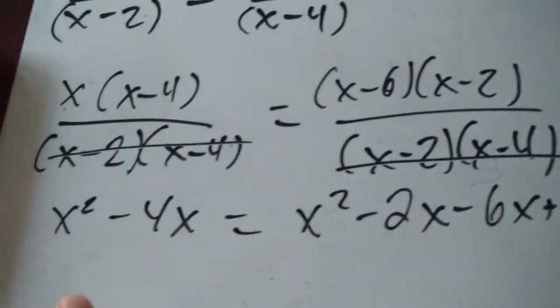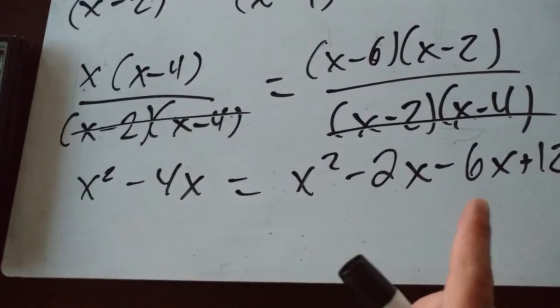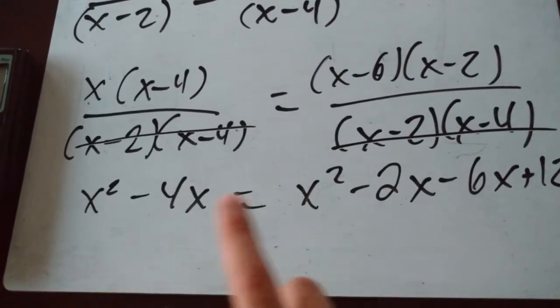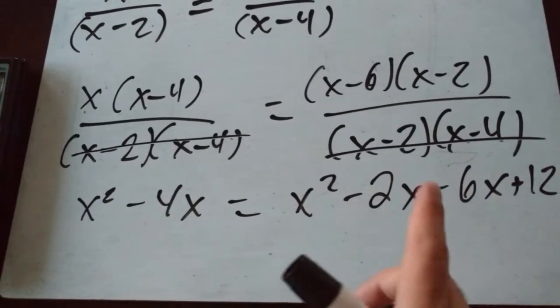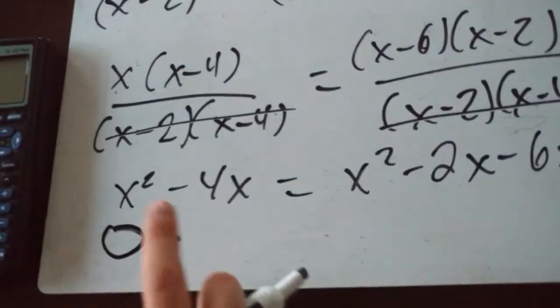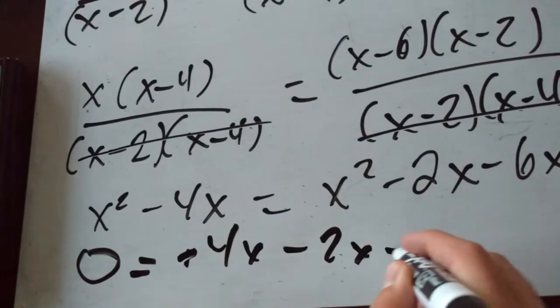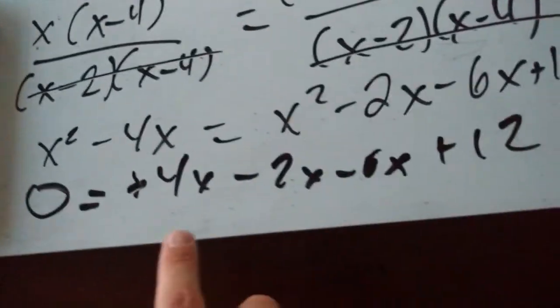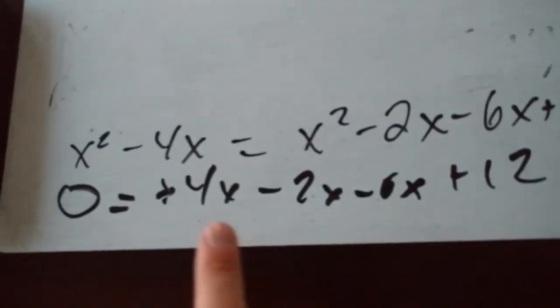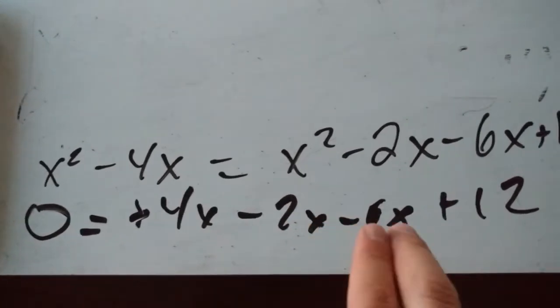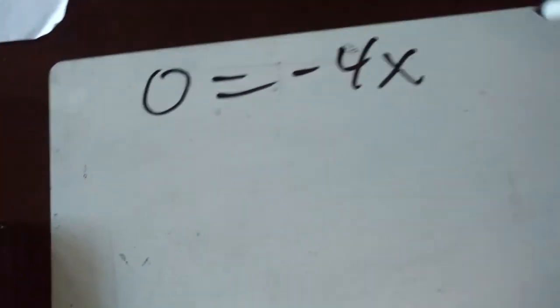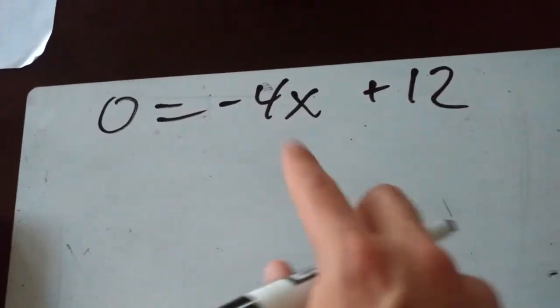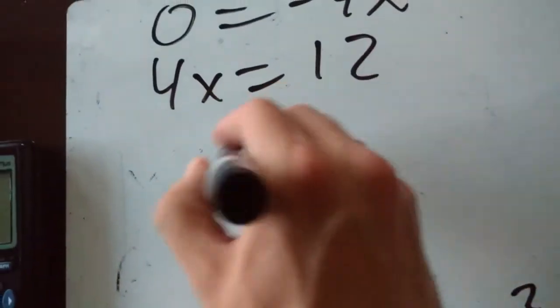Let's bring everything to one side. Subtract x squared from both sides and add 4x to both sides: the x squareds cancel, leaving 0 equals 4x minus 2x minus 6x plus 12. Combining: 4x minus 2x is 2x, and 2x minus 6x is negative 4x. So 0 equals negative 4x plus 12. Adding 4x to both sides: 4x equals 12, so x equals 3.